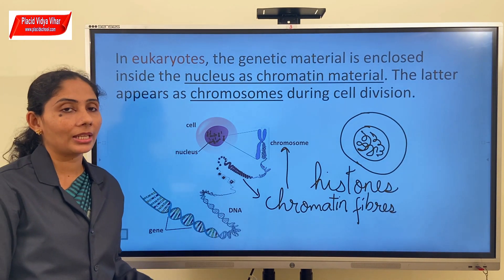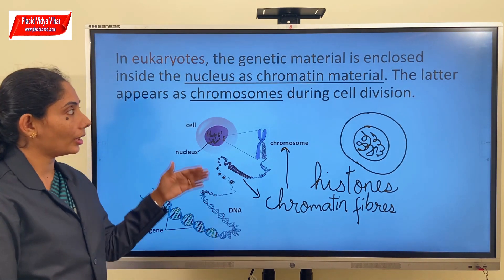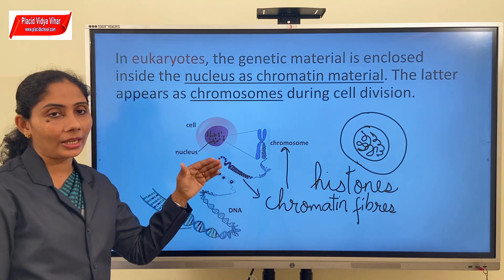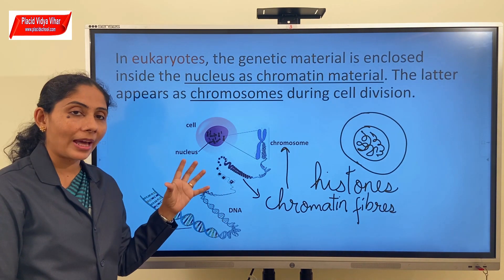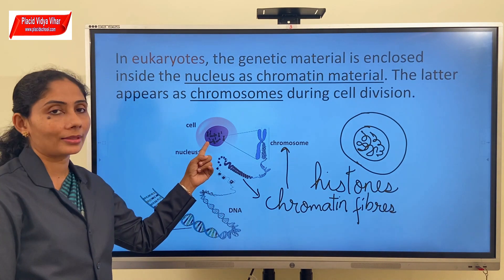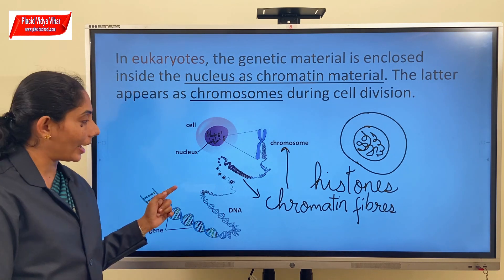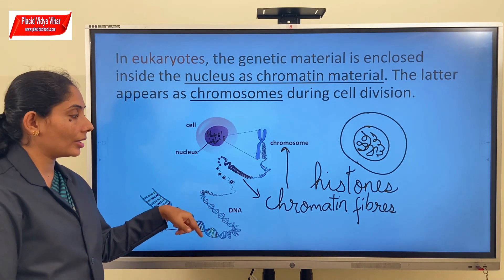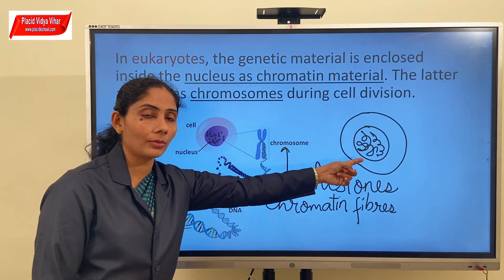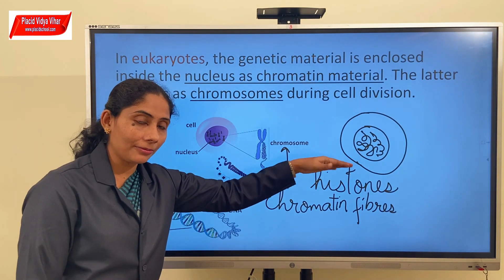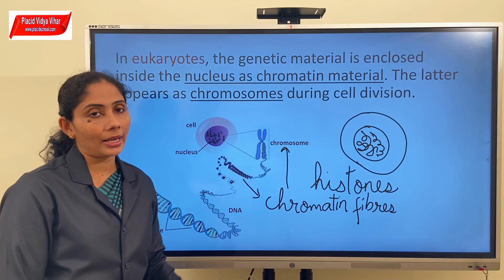So in a eukaryotic cell, the DNA or genetic material is present in a well-defined space called the nucleus. It has a membrane called the nuclear membrane and the genetic material is coiled with the help of special proteins called histones. They form chromatin fibers when the cell is not dividing, and further condense to form chromosomes during cell division.